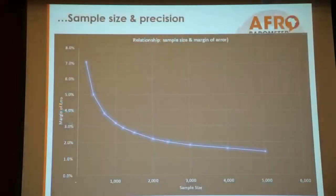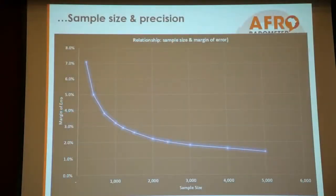That is only one aspect of the story. As the sample increases, as you can see from this diagram, the margin of error decreases. But there is a diminishing return from taking larger and larger samples, as you can see from the graph. The decision concerning sample size is therefore a trade-off among these factors.